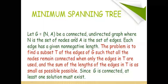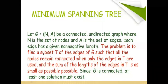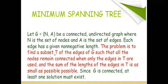Formally, suppose G = (N, A) is a connected undirected graph where N is a set of nodes and A is a set of edges. Each edge has a given non-negative length. The problem is to find a subset T of edges of G such that all nodes remain connected using only edges in T, and the sum of the lengths of the edges in T is as small as possible.